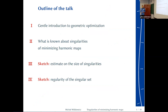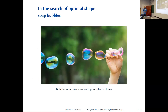I will give a review of the literature about singularities of minimizing harmonic maps. If time allows, I will sketch two results from the dissertation: the first is an estimate on the size of singularities — how many there are, how long they are, how much area they have — and the second is about the regularity of the singular set, which sounds contradictory but the singular set can itself be a manifold and we can ask how regular it is.